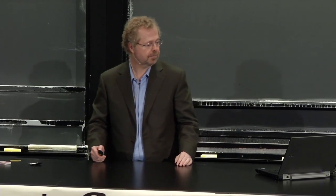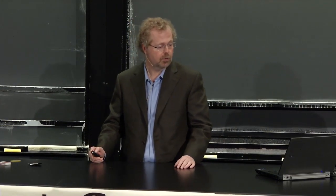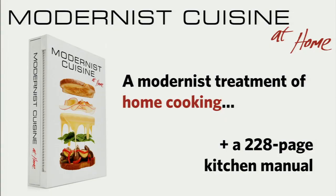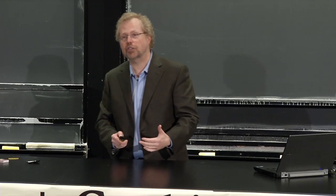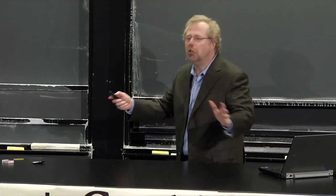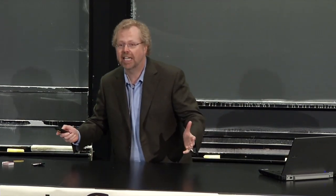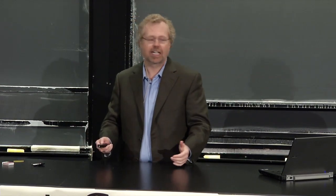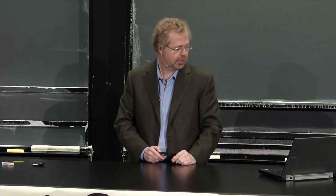So we came out with this modernist treatment of home cooking—450-some pages plus 228 pages, a slim pamphlet-like 600, almost 700 pages. Back when I first decided to write Modernist Cuisine, I thought huge meant 600 pages. Now 600 pages is my little home book.